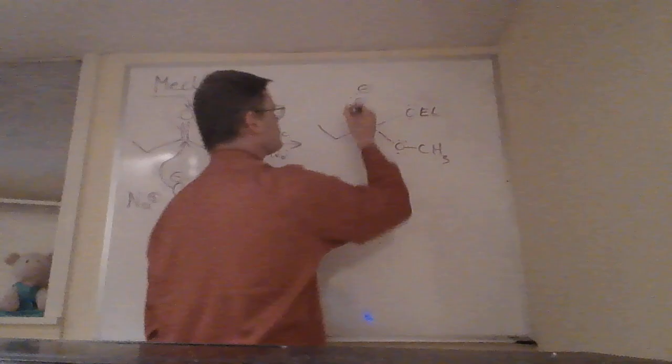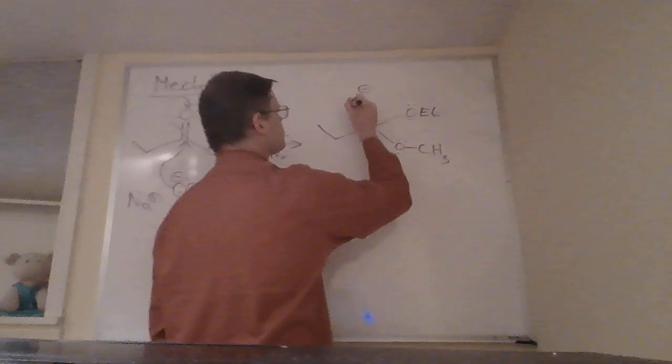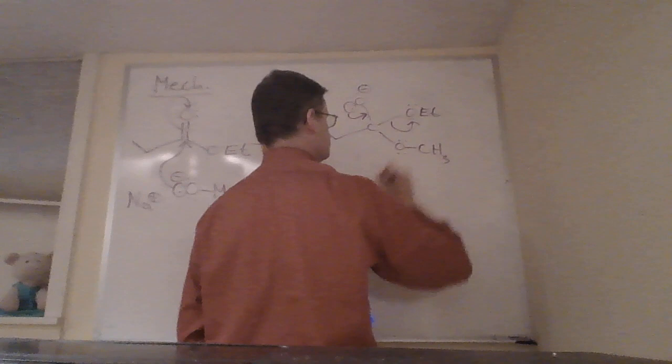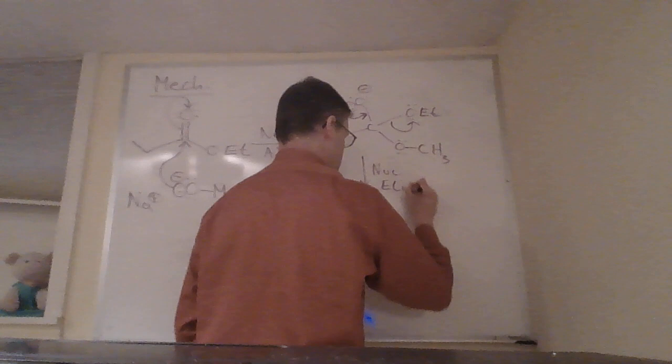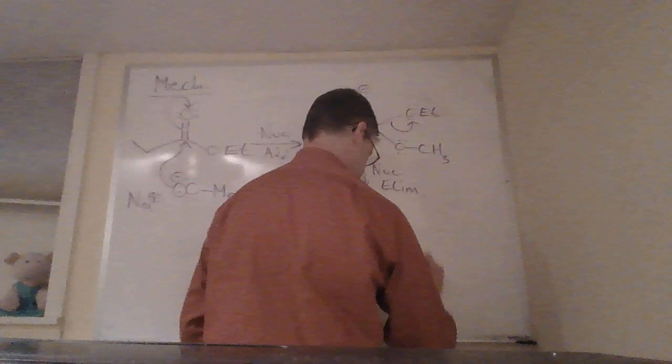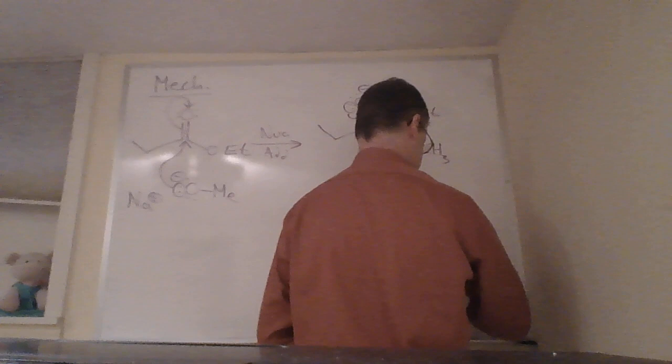In the second step of this mechanism, the ethoxide is going to leave as a leaving group, and we call that nucleophilic elimination. That's going to get us to this methyl ester, plus OEt minus, sodium ethoxide.